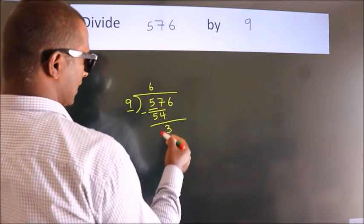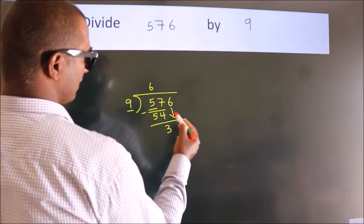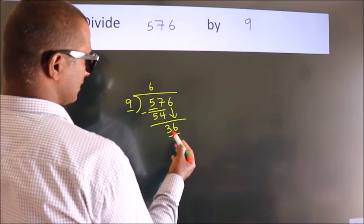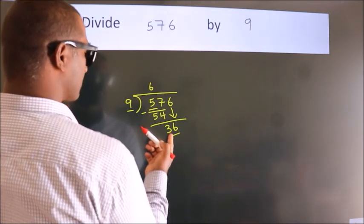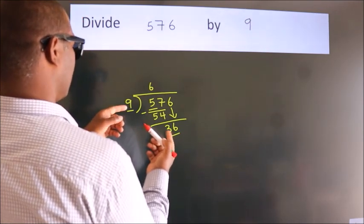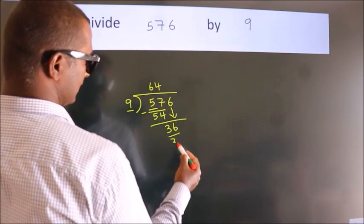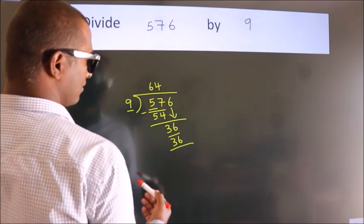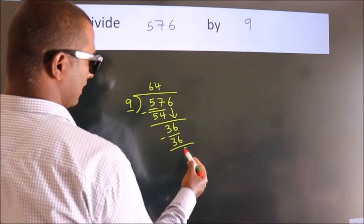After this, bring down the beside number. So 6 comes down, giving us 36. When do we get 36 in the 9 times table? 9 fours are 36. Now we subtract, we get 0.